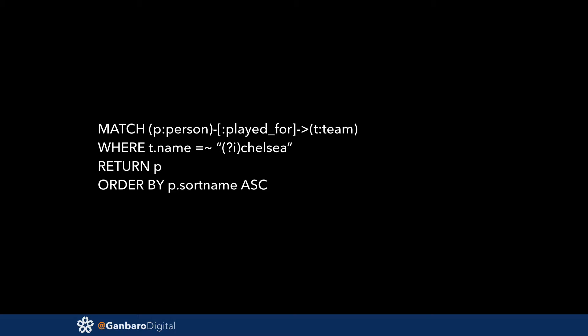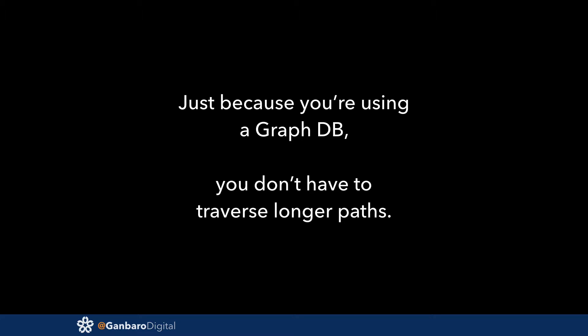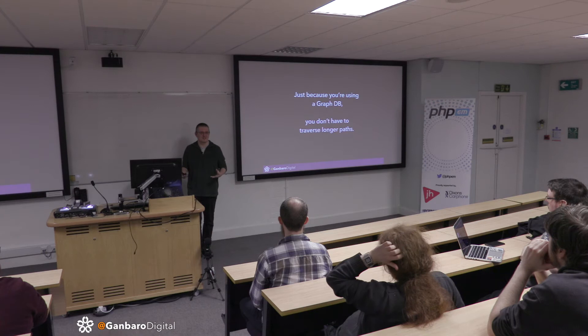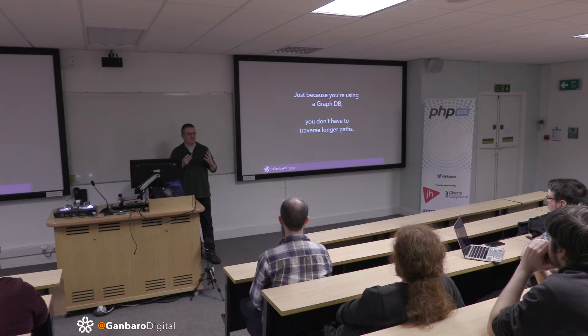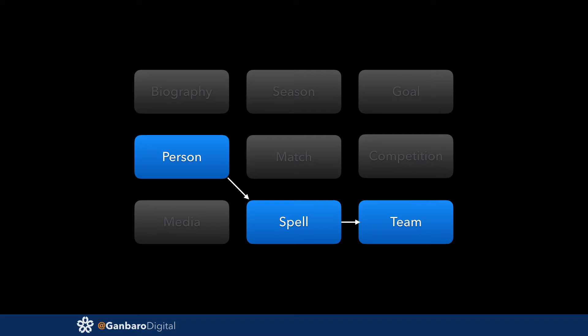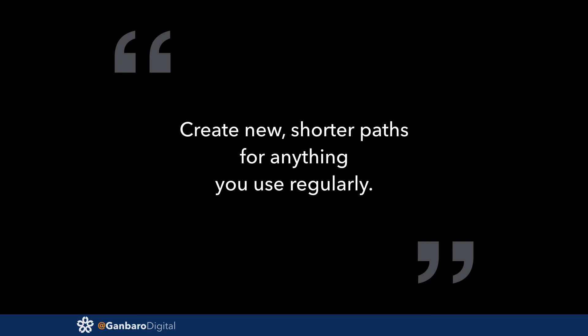We introduced a direct relationship to clear this up. You can calculate the same result with path traversal, but because this query runs every time you go to that page with no caching, we decided to collapse it. When you read about graph databases it's all about path traversal — don't get fixated on that. Change your data set to suit your circumstances. We own the data set so we can change it, and sometimes it makes sense to collapse long paths rather than traverse them every time.